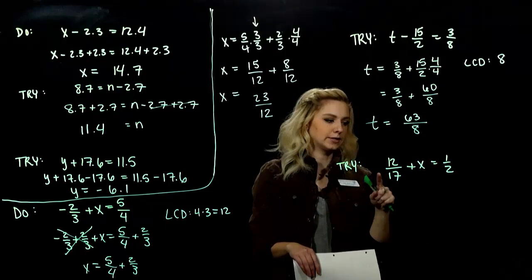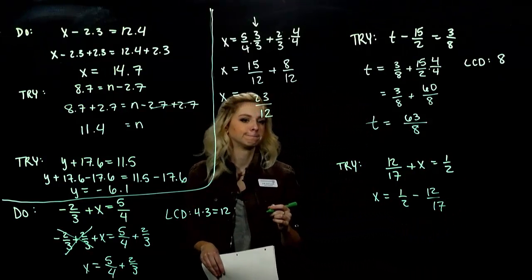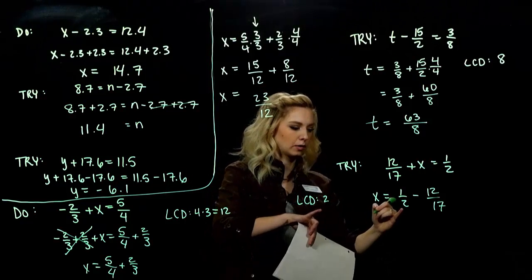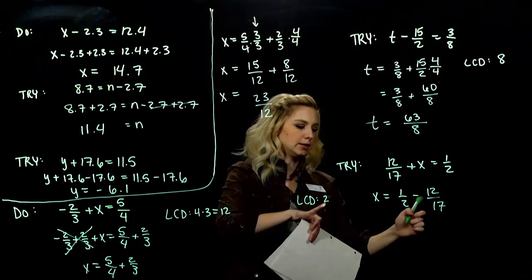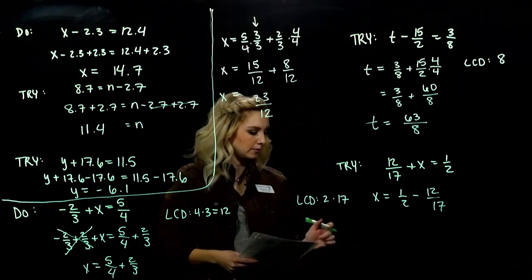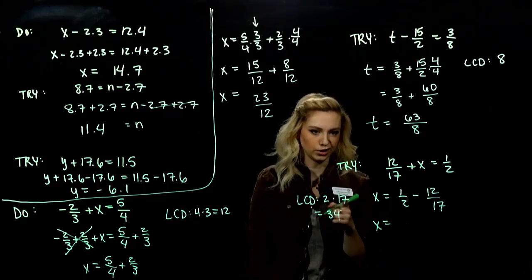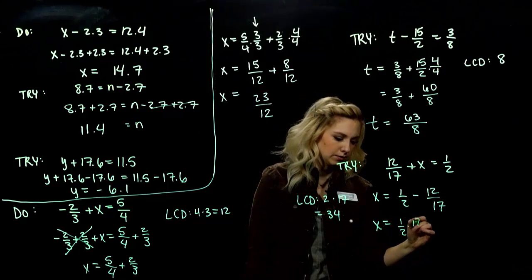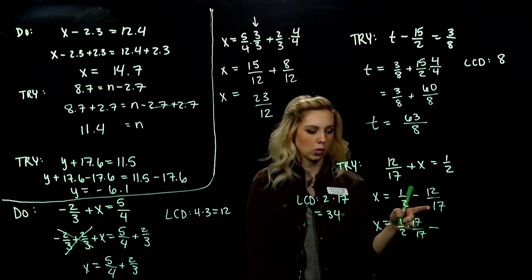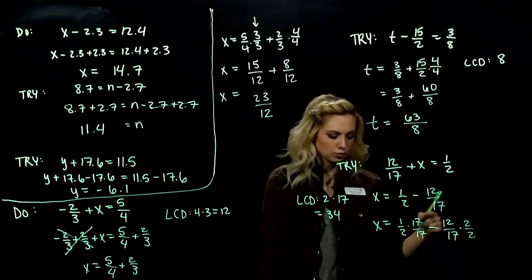Subtracting 12 seventeenths from both sides will move it over to the right. Now, we need to build the LCD. What is it in that case? I'm just going to start with the denominator on the left. What is my LCD missing that this other factor has? Factor of 17. So, our LCD, if we multiply those together, is 34. So, what do I need to multiply 2 by? It's really easy when it's in this case. 17 over 17. Just multiplying by 1. Changing what it looks like. And I'm subtracting. We need to multiply by what over here to get us to 34? 2. 2 over 2. Changing what it looks like.